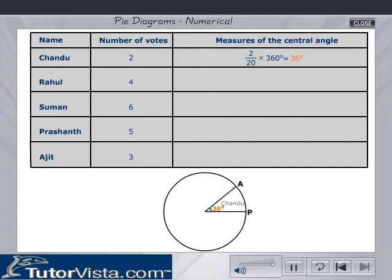The measure of the central angle for the number of votes received by Chandu is calculated. Calculate the measures of the central angles for the votes received by other boys and key in the values in the respective boxes. Use the OK button to check your answer or the solve button if you are not able to get the correct answer.